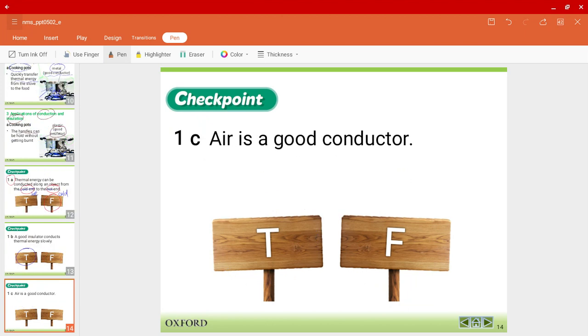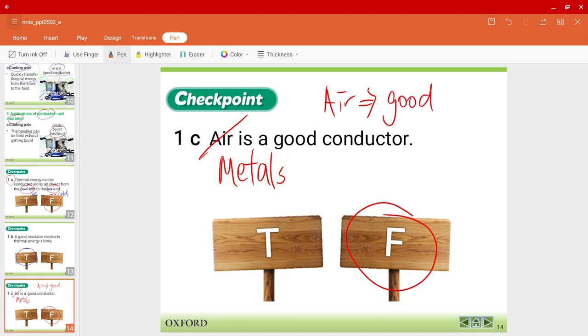Question C. Air is a good conductor. Is that true? No, it's not. What are good conductors? Metals. So actually air is a good insulator instead. Please bear in mind the spellings.